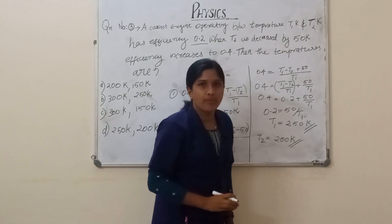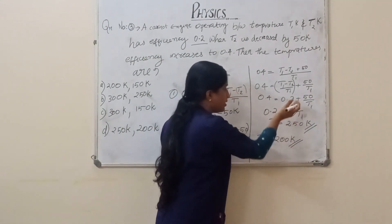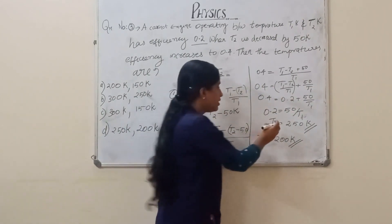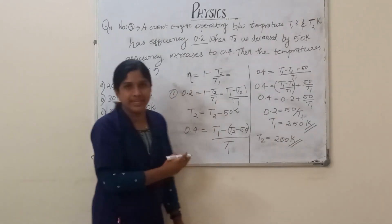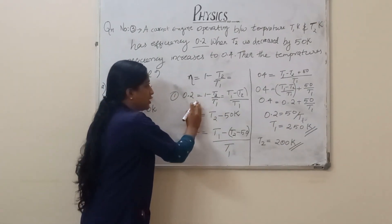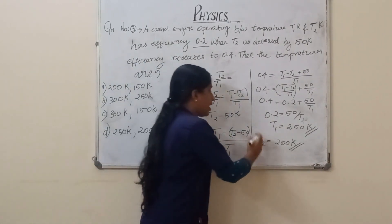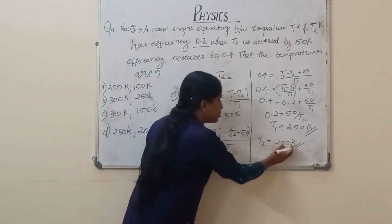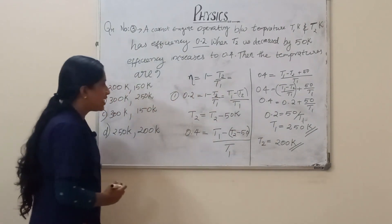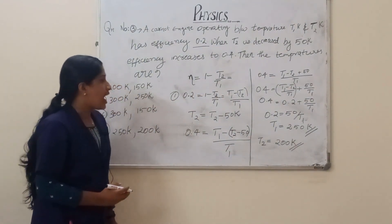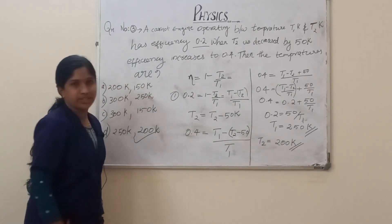So 0.4 = 0.2 + 50/T1. Solving this equation, we get T1 = 250 Kelvin. That is, option D is the correct answer.